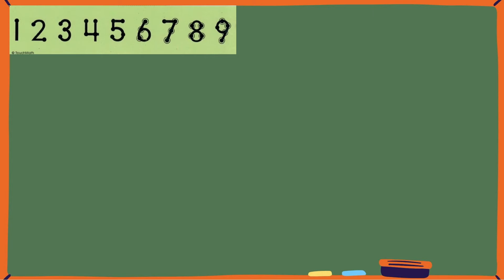In this final problem, 15 minus 8, we'll take a look at how to count a double touch point. Let's place 4 double touch points on the 8. We'll touch and say 15 and then count back.